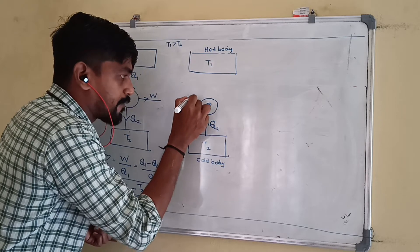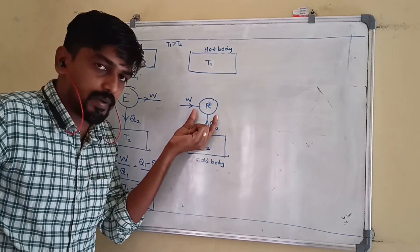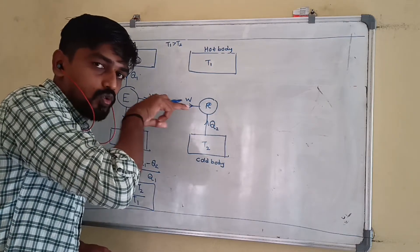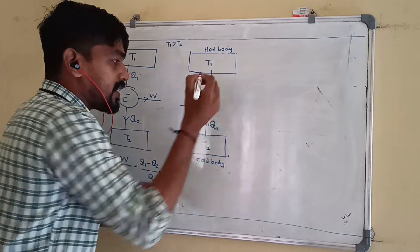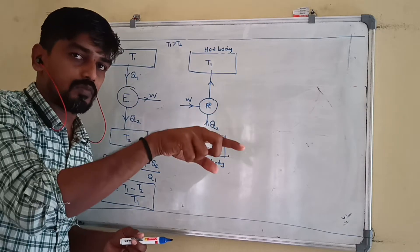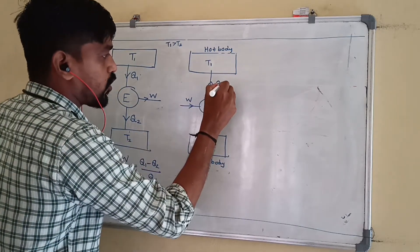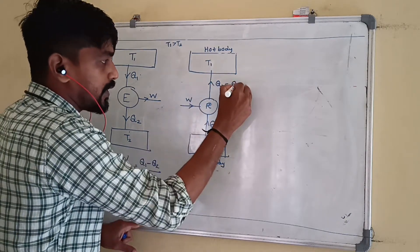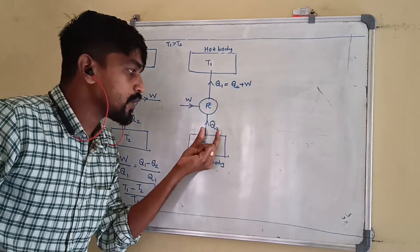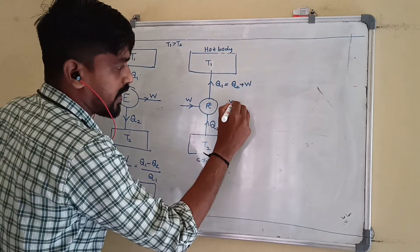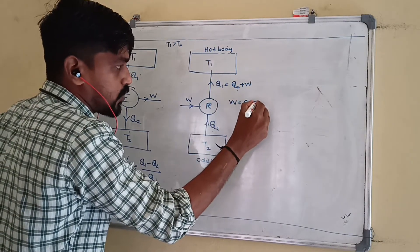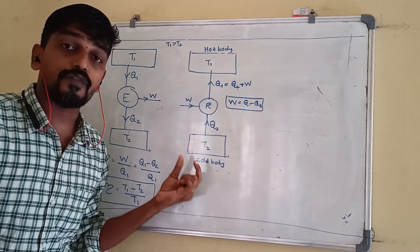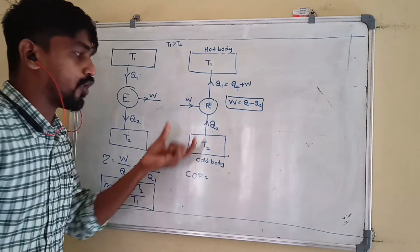The refrigerator absorbs Q2 amount of heat from the low-temperature reservoir to maintain that temperature. We supply W amount of work as input. The total heat rejected Q1 equals Q2 plus W. Therefore, W equals Q1 minus Q2. In the case of a refrigerator, we use the coefficient of performance, COP, instead of efficiency.